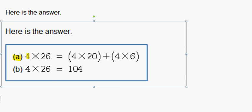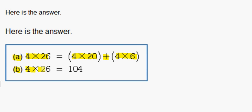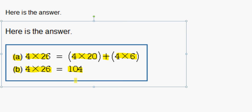So we know that in A we had 4 times 26 equals 4 times 20 plus 4 times 6. And in B we know that 4 times 26 is 104.